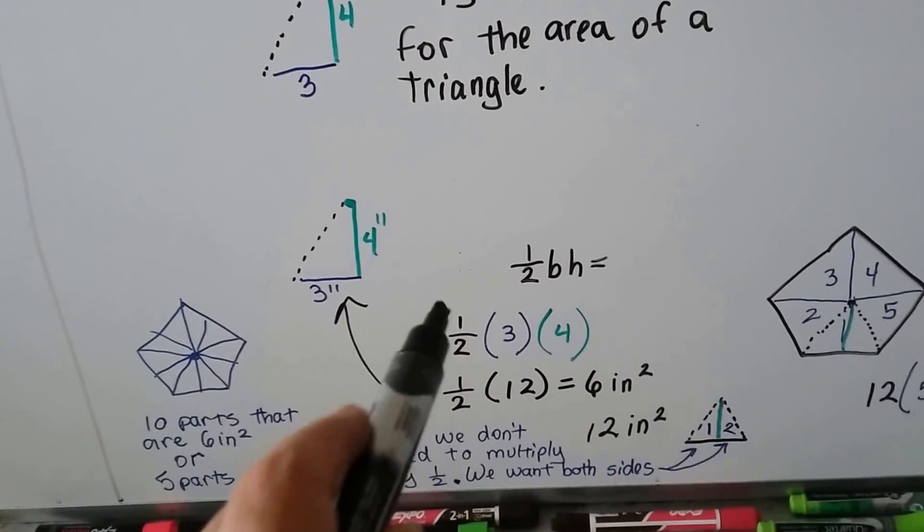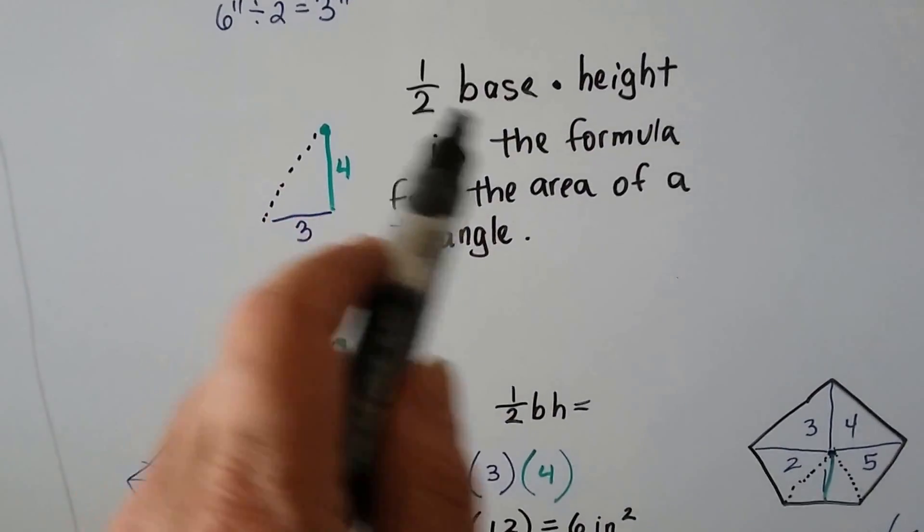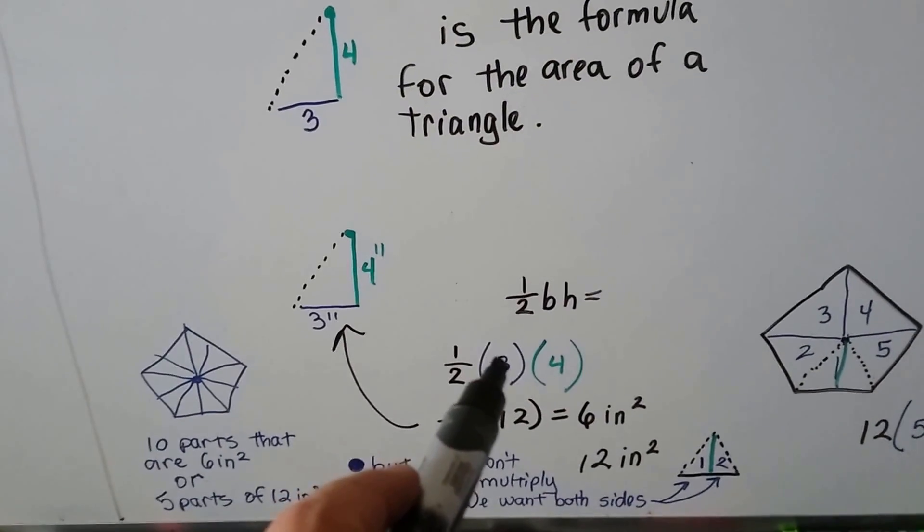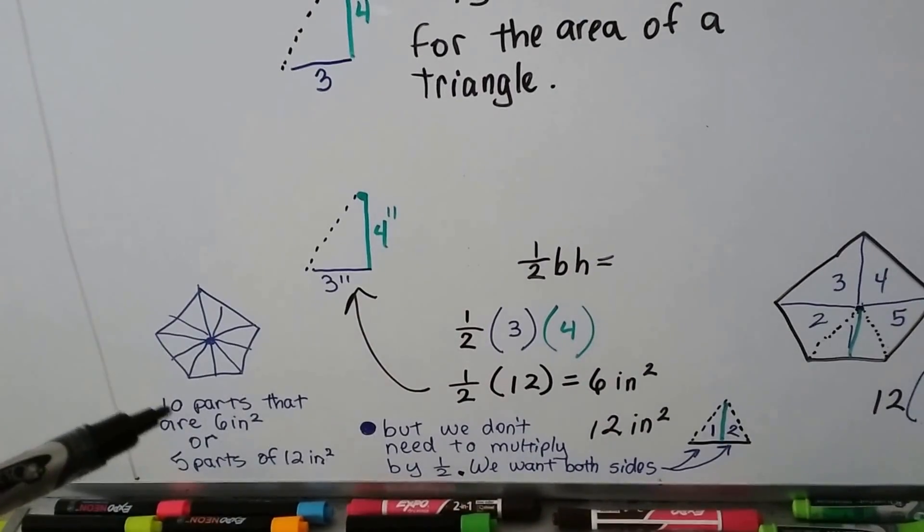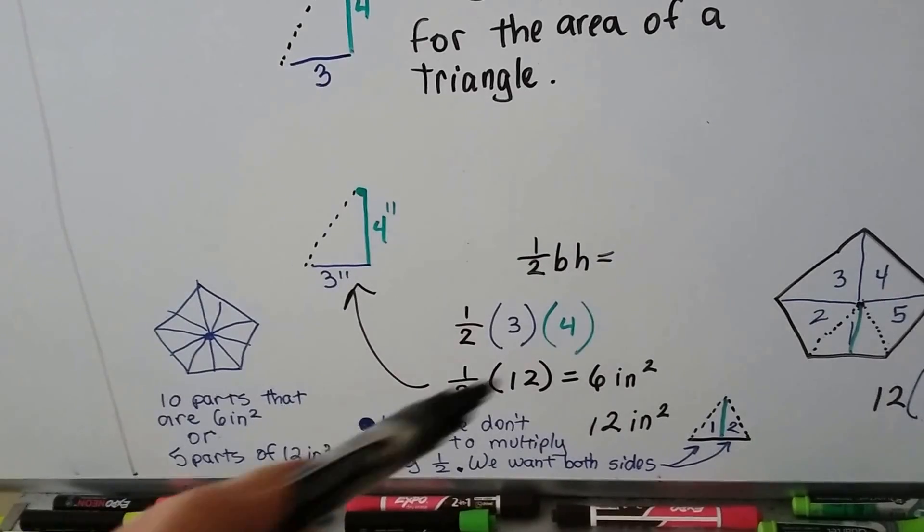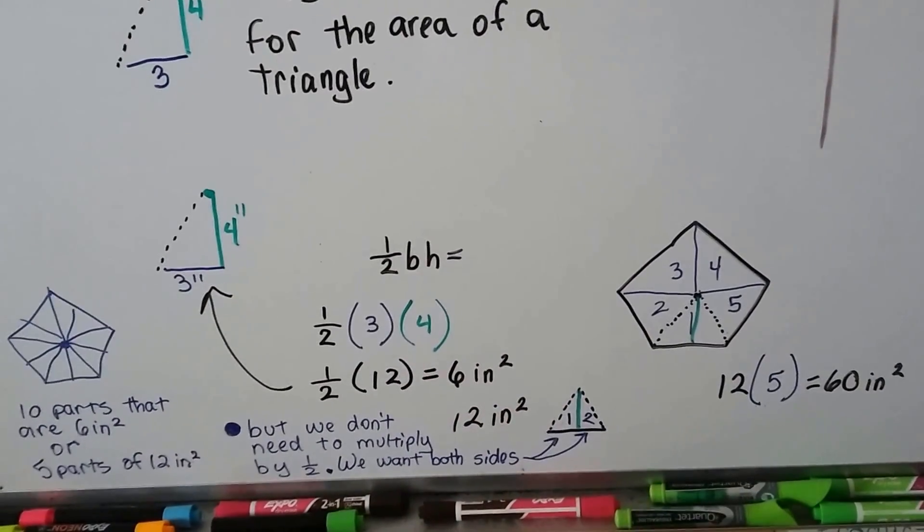But we didn't have to do that. We didn't have to multiply it by that half for that formula, the half base height. We could have just done three times four. And instead of doing 10 parts that are six inches square, we could have just kept it at 12 and multiplied it by five and got our 60 inches square.